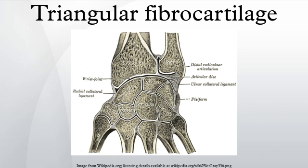Class 2, Degenerative: A. TFCC wear; B. TFCC wear plus lunate and ulnar head chondromalacia; C. TFCC perforation plus lunate and ulnar head chondromalacia; D. TFCC perforation plus lunate and ulnar head chondromalacia plus lunotriquetral ligament perforation; E. TFCC perforation plus lunate and ulnar head chondromalacia plus lunotriquetral ligament perforation plus ulnocarpal arthritis.